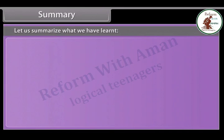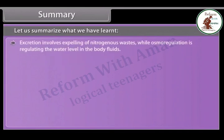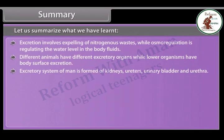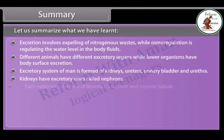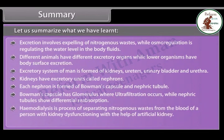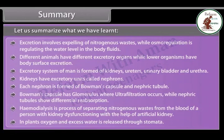Summary: excretion involves expelling of nitrogenous wastes, while osmoregulation is regulating the water level in body fluids. Different animals have different excretory organs; lower organisms excrete through their body surface. The excretory system of man is formed of kidneys, ureters, urinary bladder, and urethra. Kidneys have excretory units called nephrons, each formed of Bowman's capsule and a nephric tubule. Bowman's capsule has a glomerulus where ultrafiltration occurs, while nephric tubules show differential reabsorption. Haemodialysis is the process of separating nitrogenous wastes from the blood of a person with kidney dysfunction using an artificial kidney. In plants, oxygen and excess water are released through stomata.